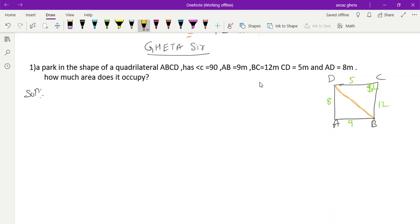Let's first find out BD by using Pythagoras theorem in triangle BCD. Angle C is 90 degrees. Square of hypotenuse is equal to sum of the square of other two sides. BD² = BC² + CD². BD² = 12² + 5² = 144 + 25 = 169. BD = √169 = 13 meters.